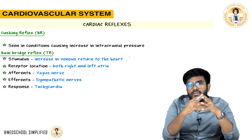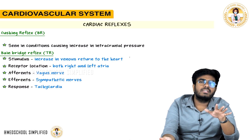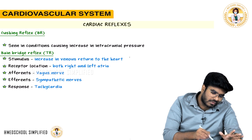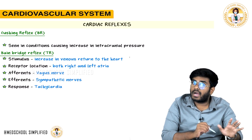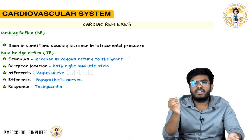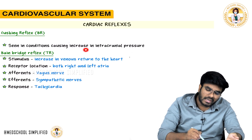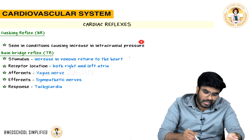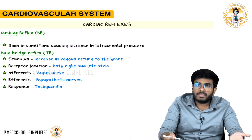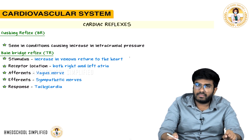Whenever intracranial pressure increases, the vagus nerve is activated, which is a parasympathetic nerve. The vagus nerve decreases heart rate by releasing acetylcholine. So the key point: Cushing's reflex is a bradycardic reflex. Head trauma causes hemorrhage, which forms a hematoma, increasing intracranial pressure, activating the vagus nerve, causing bradycardia.